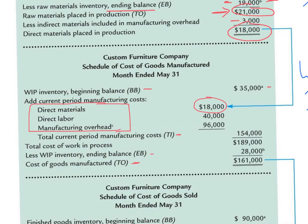The direct materials — we just figured out that $18,000 was transferred in from the first schedule, as shown by the arrow. Then we have direct labor: by looking at time sheets for people working in the production facility, we get $40,000 for payroll. Then we have manufacturing overhead — all those other factory costs like factory insurance, indirect materials, and indirect labor — totaling $96,000. The total of these three items is $154,000 transferred in to work in process, giving us $189,000 total cost in work in process.